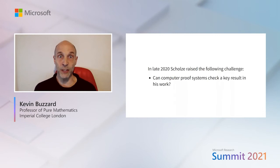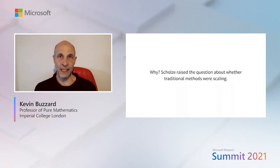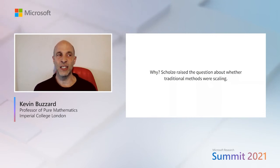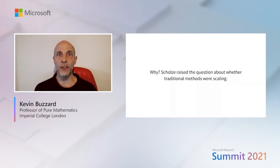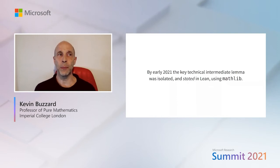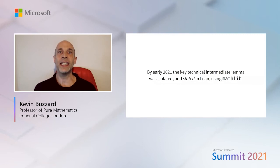The reason Scholze asked this was that he looked at how the mathematical community was assimilating his results and became concerned that they were not checking the intricate details of the arguments. He asked whether our study group in London had checked these careful details — and we'd looked at things, but hadn't gone through everything with a fine-tooth comb. Scholze said: this is new material and I believe it's very important. This needs to be checked, and I'm not convinced that the human system is scaling. By early 2021, the key technical intermediate lemma which he felt no human had checked properly had been stated in the Lean theorem prover using the gigantic maths library.